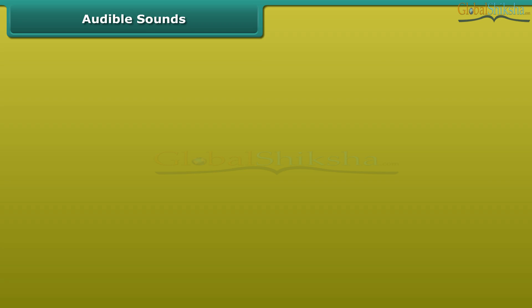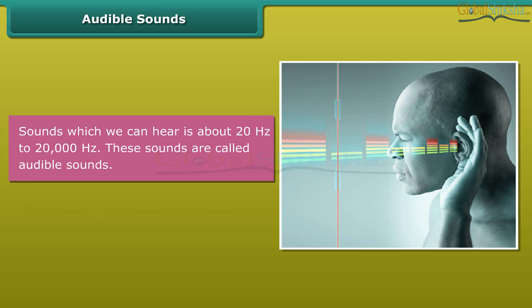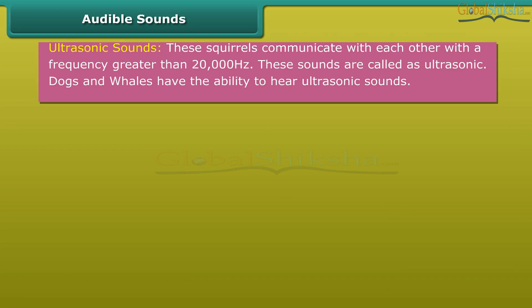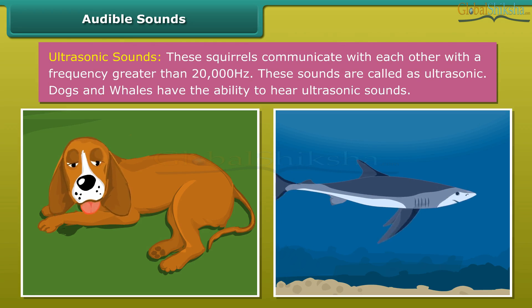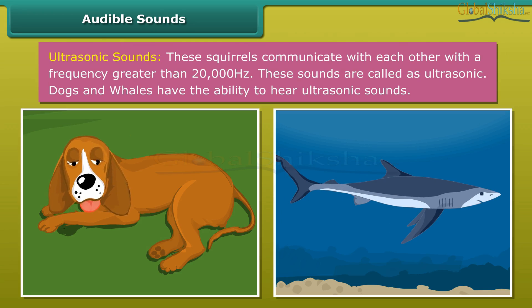Audible sounds: Sounds which we can hear is about 20 hertz to 20,000 hertz. These sounds are called audible sounds. Ultrasonic sounds: These squirrels communicate with each other with a frequency greater than 20,000 hertz. These sounds are called ultrasonic.